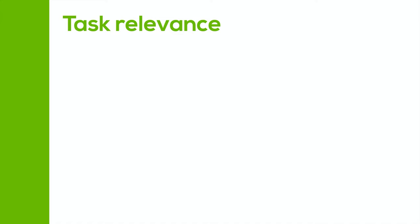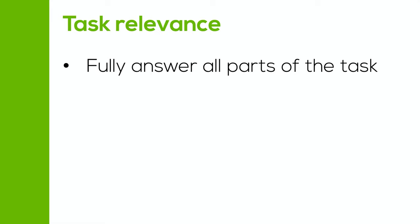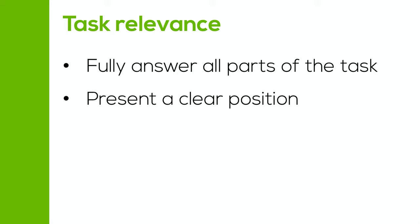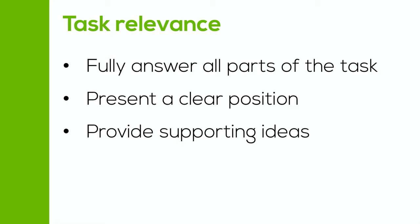But that's not it. Now let's take a look quickly at the three other sections of the production subscore. The next part is task relevance. This basically means: are you able to respond to the task, the questions or the prompt correctly? To do this well, you should think about three things. Firstly, are you able to fully address all parts of the task? Some questions might have more than one section, so you have to read the question carefully and respond to all parts. Also, are you able to present a clear position or present your ideas clearly? And lastly, are you able to provide supporting ideas which add more information to your main point?